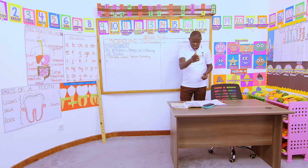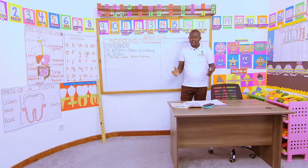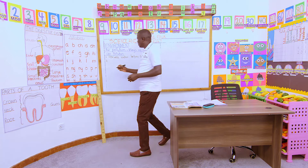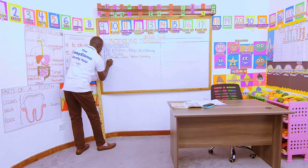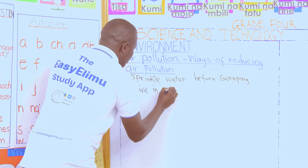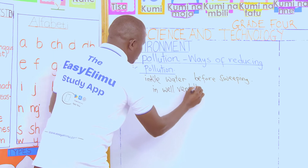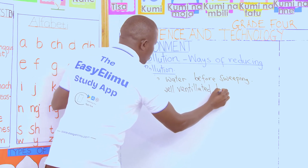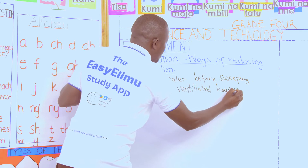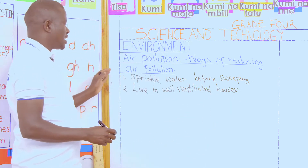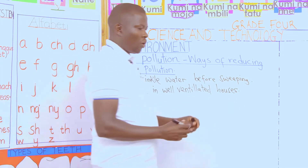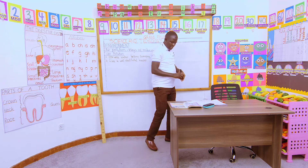Another way — live in well-ventilated houses. That is correct. Live in well-ventilated houses so that in case dust enters, there is free circulation of air in the house.